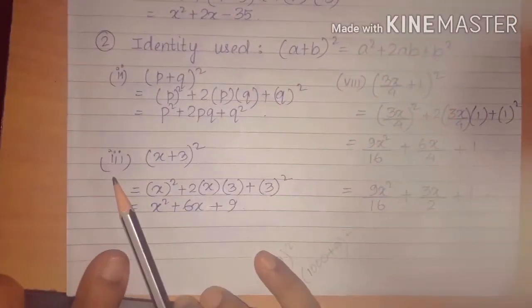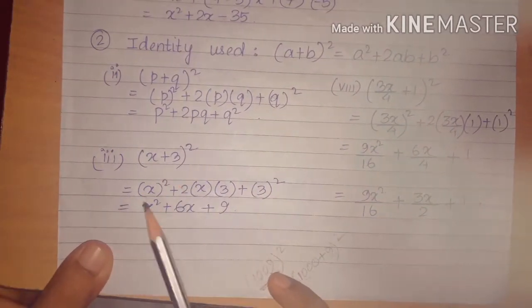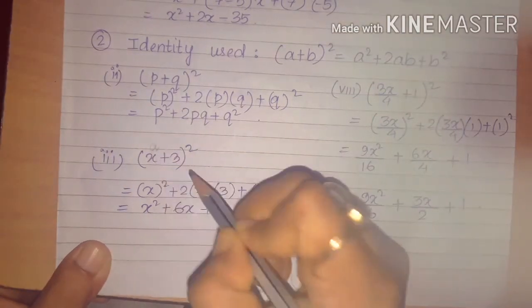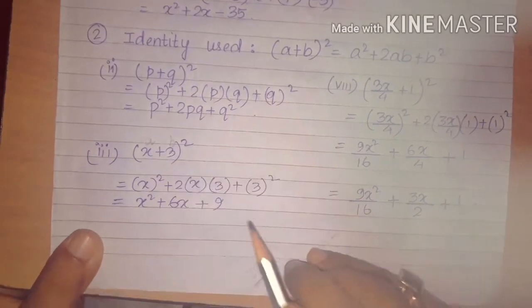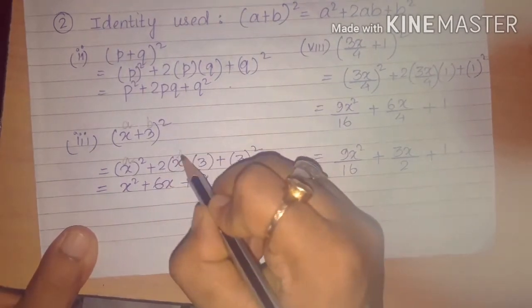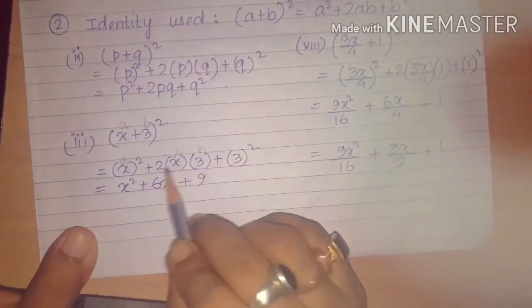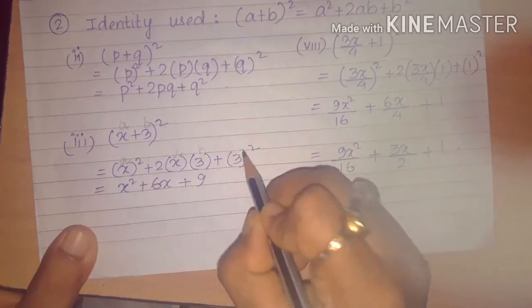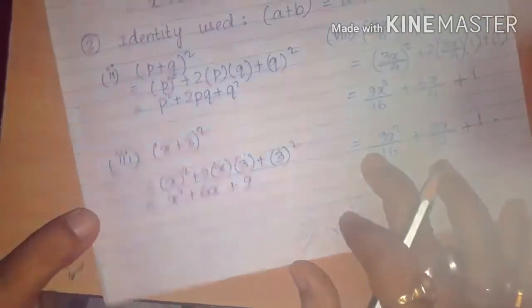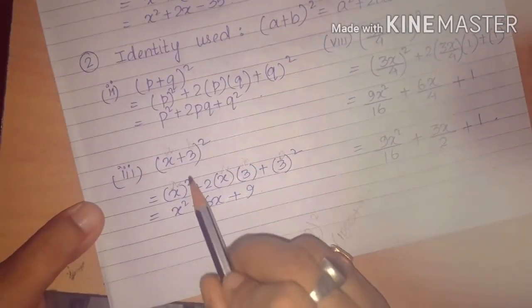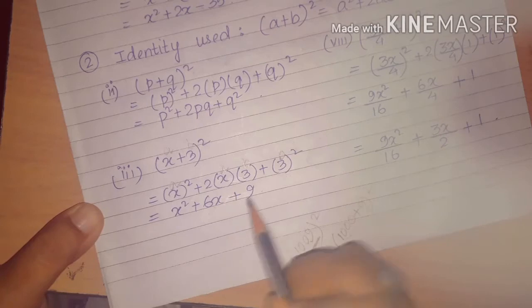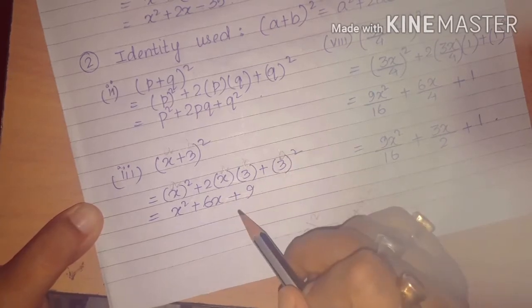Next is (x+3)². Applying the formula: a² is x², then 2ab where a is x and b is 3, so 2×x×3 = 6x, plus b² = 3² = 9. Final answer: x² + 6x + 9.